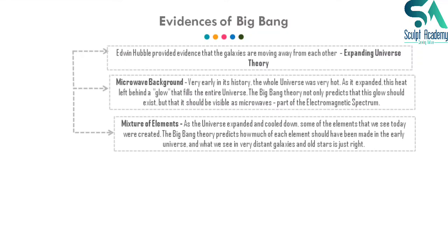Third is the mixture of elements. As the universe expanded and cooled, the elements we see today were created. The Big Bang theory predicts how much of each element should have been created in the early universe, and what we see in very distant galaxies and old stars matches these predictions. This also provides proof that the Big Bang theory has a factual basis.